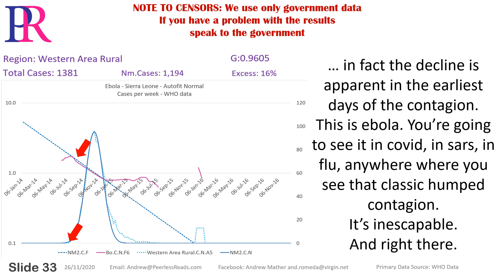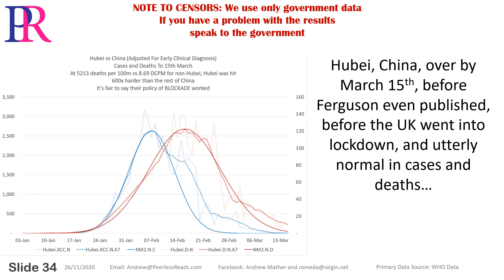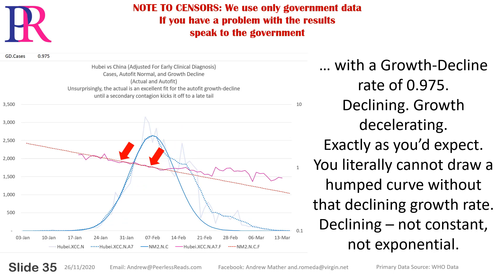In fact, the decline is apparent in the earliest days of the contagion. This is Ebola — you're going to see it in COVID, in SARS, in flu. Anywhere where you see that classic humped contagion, it's inescapable. And right there — Hubei, China — over by March 15th, before Ferguson even published, before the UK went into lockdown, and utterly normal in cases and deaths, with a growth decline rate of 0.975. Declining, growth decelerating, exactly as you'd expect. You literally cannot draw a humped curve without that declining growth rate. Declining. Not constant. Not exponential.